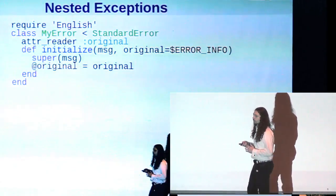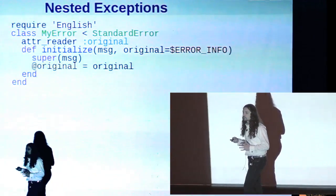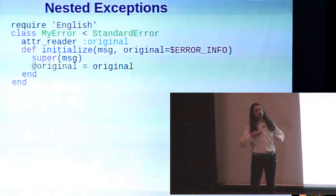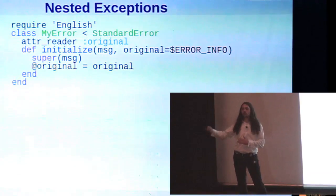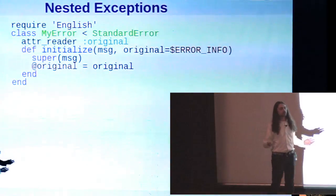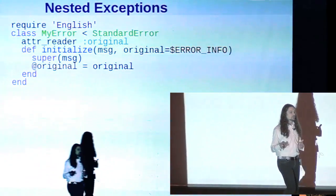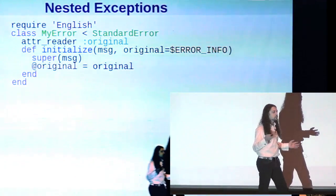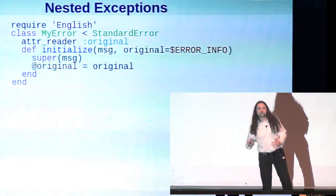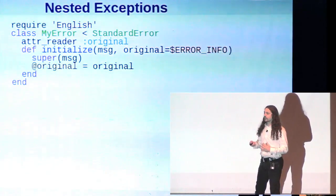Something else we can use the global error info variable for is nested exceptions. Nested exceptions, if you're not familiar with them, is just the idea of an exception which has a pointer back to whatever exception spawned it. So if you have a case where you rescue one exception and then you raise another one, nested exception has a pointer back to it. Ruby doesn't have these built in, but it's very simple to define a nested exception class. Here's an example. It's just a few lines of code. We just add that original attribute to the class and have a way to set it when we raise the new exception.